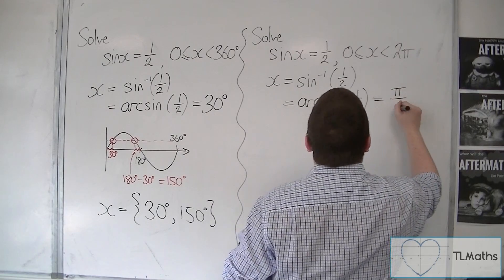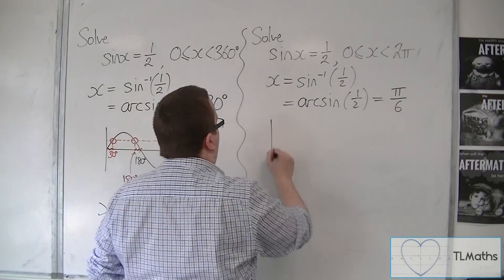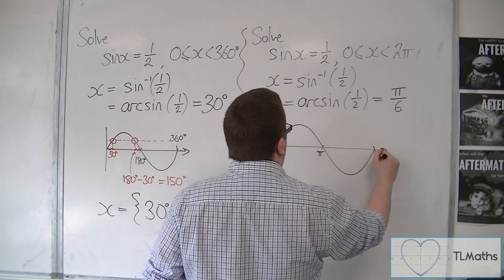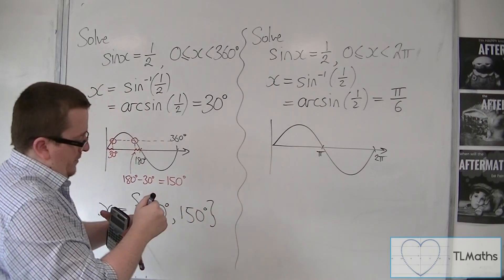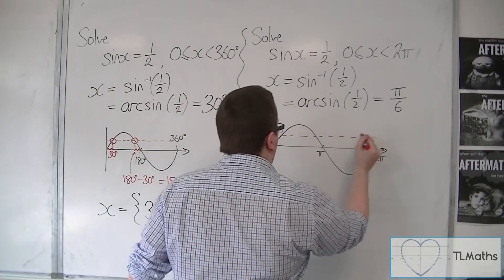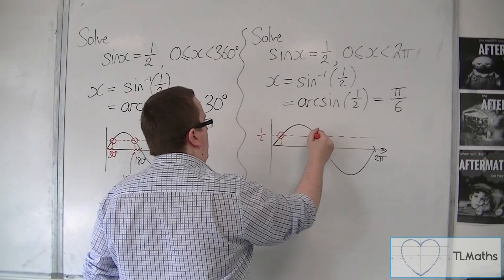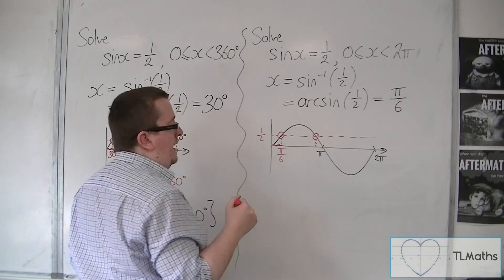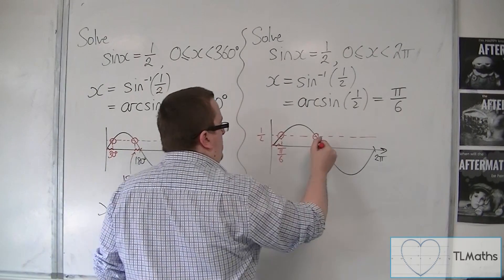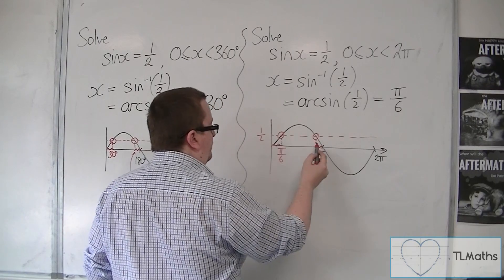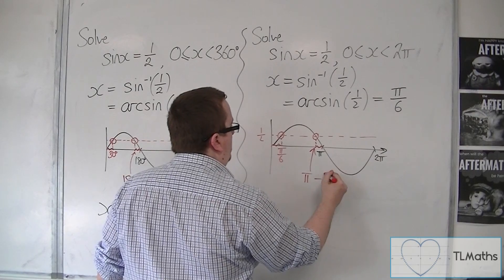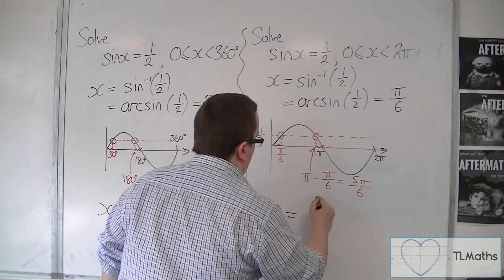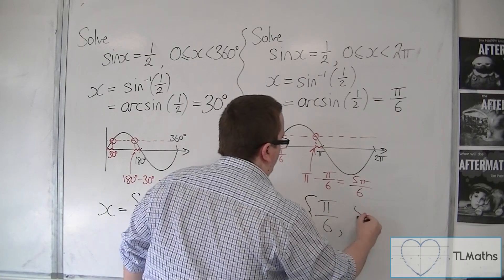Now we can do inverse sine of one half, and our calculator should give us one sixth pi, or pi over six. We then sketch the curve — there's sine x, with pi and two pi marked. We draw in our half line; it's crossing the curve at two points. This first one corresponds with pi over six. That distance is pi over six, and so the second distance is exactly the same, meaning the second solution is pi take away pi over six, which is five pi over six. So there are two solutions in radians: pi over six and five pi over six.